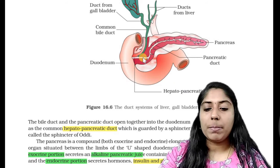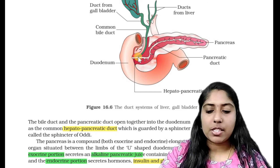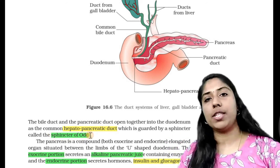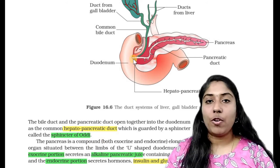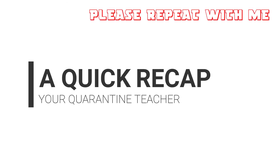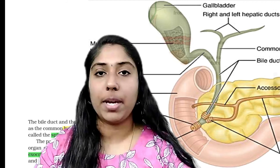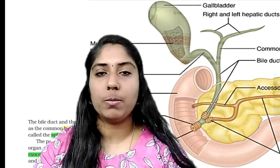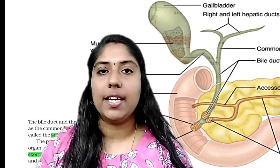The pancreatic duct joins the common bile duct to form the hepatopancreatic duct, which is guarded by a sphincter called the Sphincter of Oddi. This sphincter controls the opening and closing of the duct. The cystic duct from the gallbladder and the hepatic duct from the liver together form the common bile duct, which then becomes the hepatopancreatic duct.